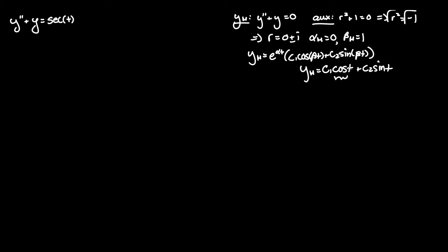This is important because we need to take our two functions being multiplied by c1 and c2 to be y1 and y2, which are needed to evaluate y particular, which equals v1 y1 plus v2 y2.